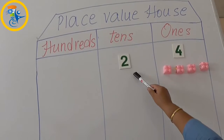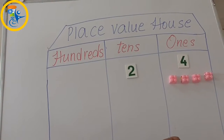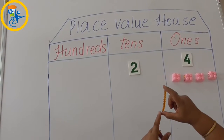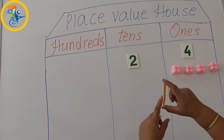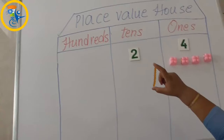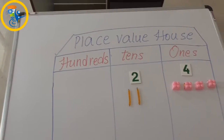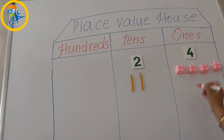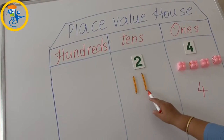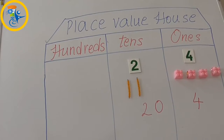Now let us understand the value of 2 at tens. 2 at tens — I am going to place this grid. If you count this: 1, 2, 3, 4, 5, 6, 7, 8, 9, 10. So 1 ten is nothing but 10 ones. Here it goes: 1 ten and 2 tens. So the value of 4 at ones is 4, and the value of 2 at tens is 20.